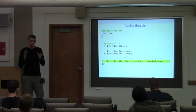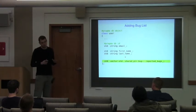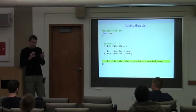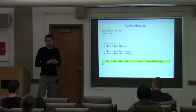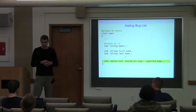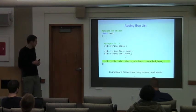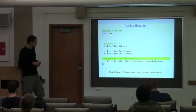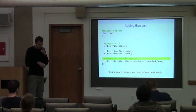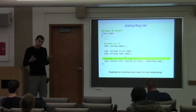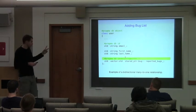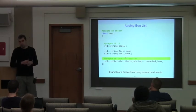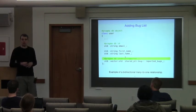A relational modeling expert would immediately say that's redundant. In relational databases, a reference can always be traversed in both directions — unlike C++. So to fix this, we can tell the ODB compiler that one side of this bidirectional relationship is actually a mirror or inverse side of the other. Once we do that, the reported bugs table will be gone, and our schema is clean.